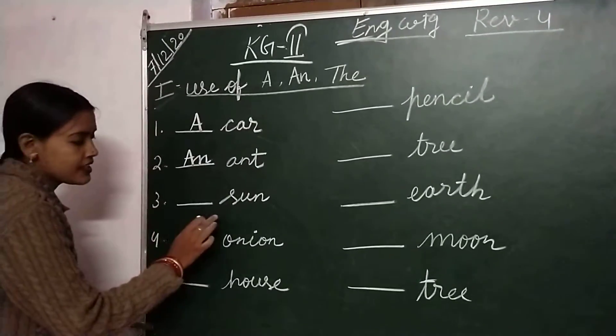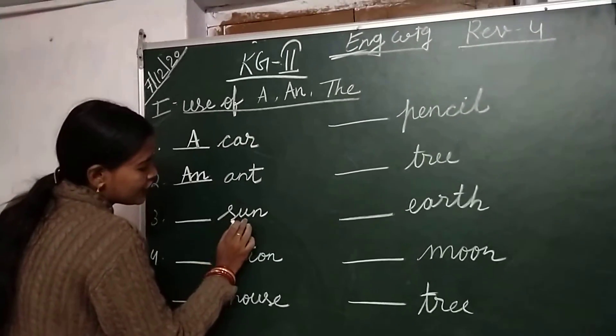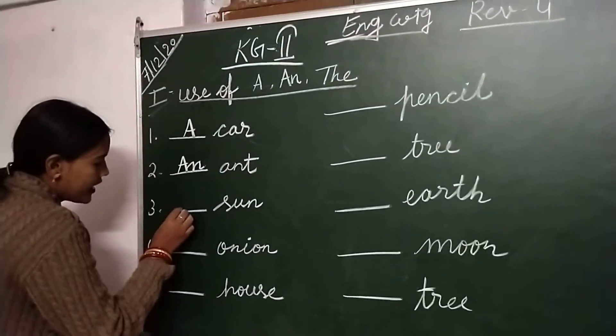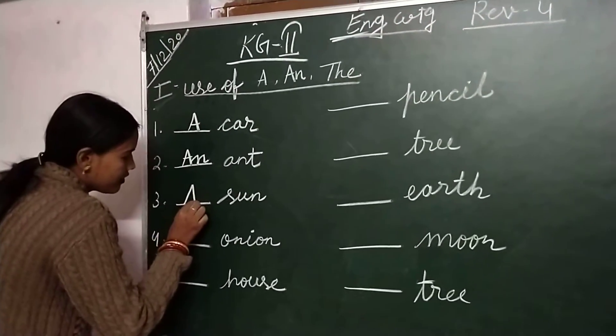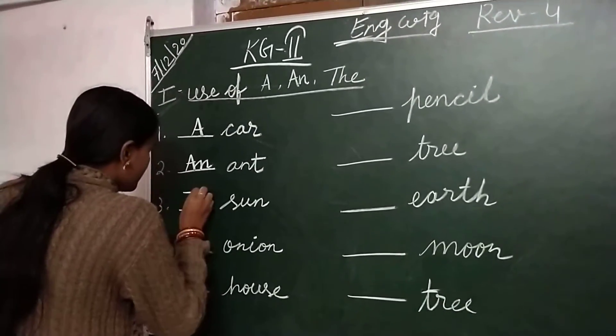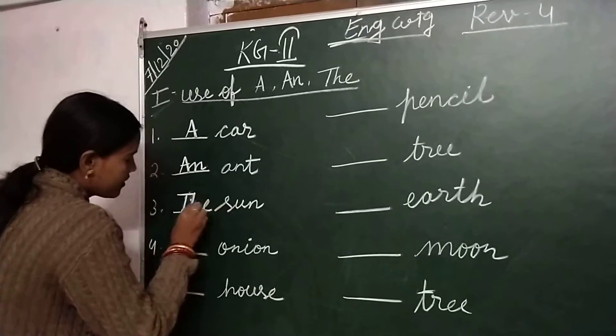Number 3 is sun. S-U-N, sun. Write down: the sun.